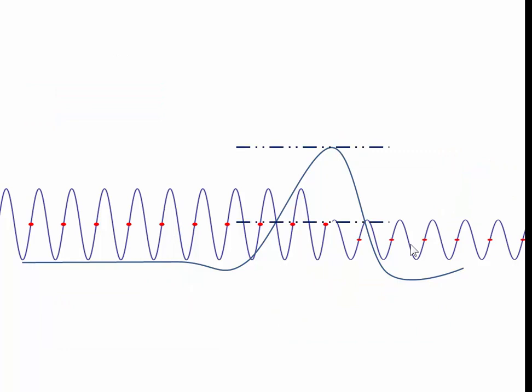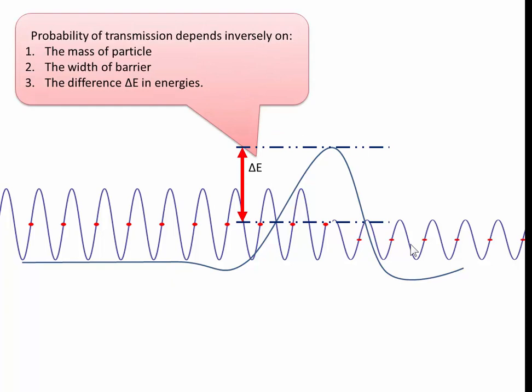Another way of looking at this is that the particle, or the wave, has a certain amount of energy and the potential barrier has another level. So this change in energy is what needs to be overcome. The probability of transmission depends inversely on the mass of the particle. The bigger the particle, the less likely it will be found on the other side.